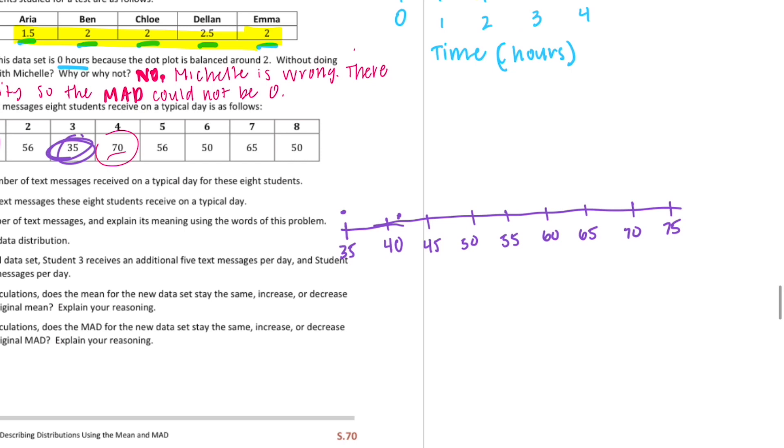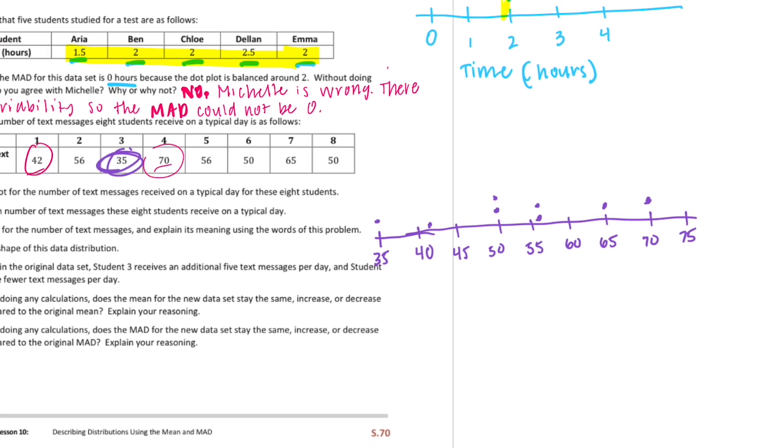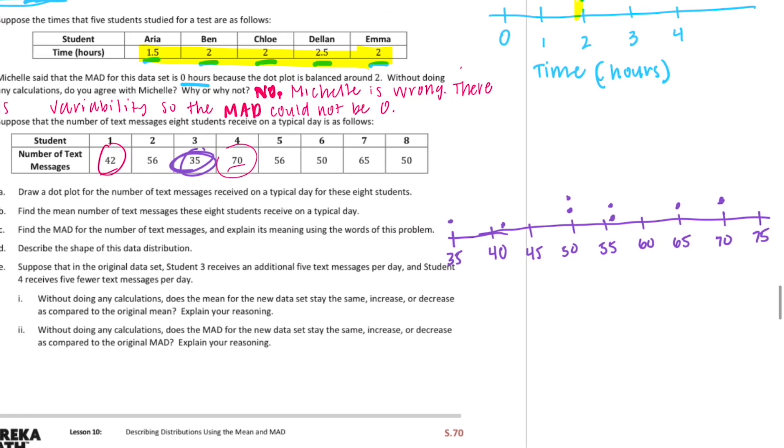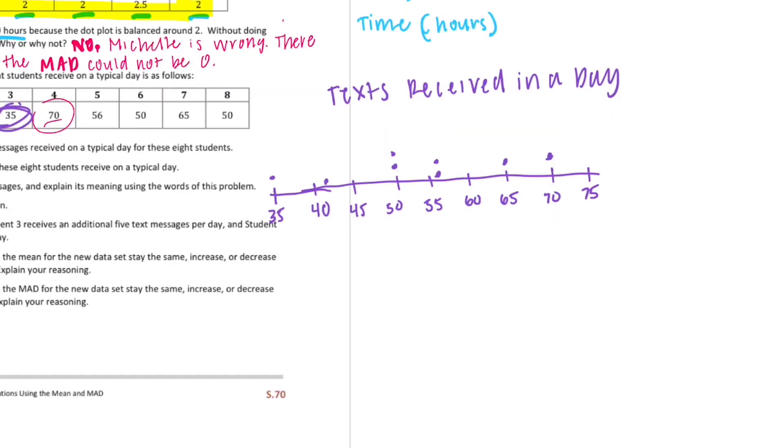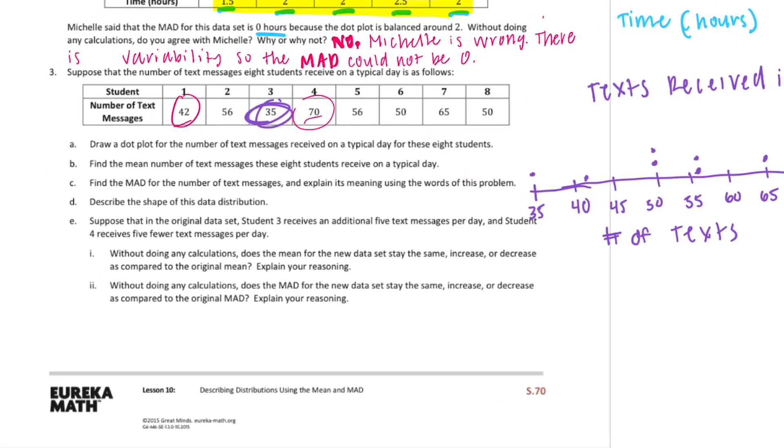Okay, 56, we already did the 35, 70, 56, another 56, 50, 65, and another 50. All right, make sure we have eight. One, two, three, four, five, six, seven, eight. Yep, we got them all plotted. And then let's give it a title. So let's say title text messages received, we could say. Let's say text received in a day. And go ahead and label it number of texts.